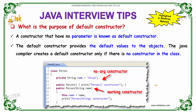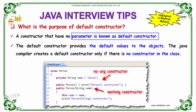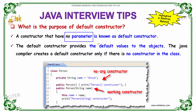What is the purpose of a default constructor? A constructor that does not have a parameter is known as a default constructor. You don't have any parameter for the default constructor. Default constructor provides default values to the objects.